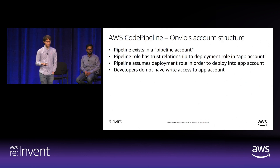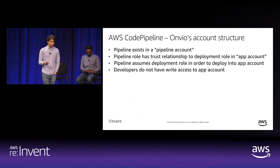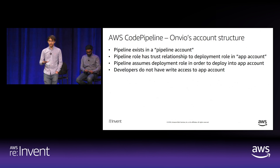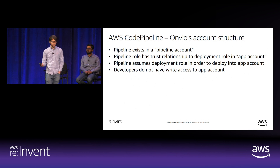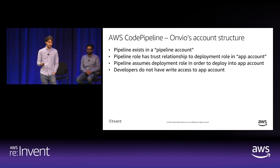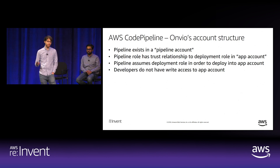At Thomson Reuters, for every project we create a pipeline account where CI/CD resources like CodePipeline are created, and separate application accounts where actual application infrastructure lives. An IAM role in the pipeline account has a trust relationship to a deployment role in the application account, so the pipeline can assume that role and make API calls to the application account. Developers may not even have write access to the application account—this enforces CI/CD so all code reaching the application account must go through the pipeline.